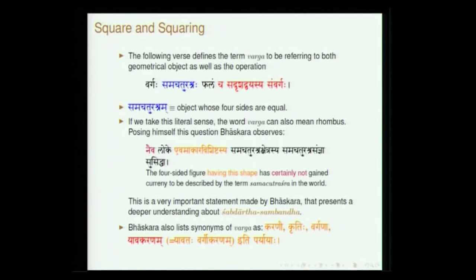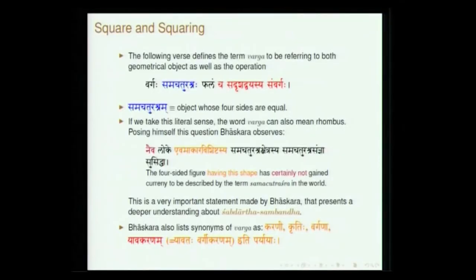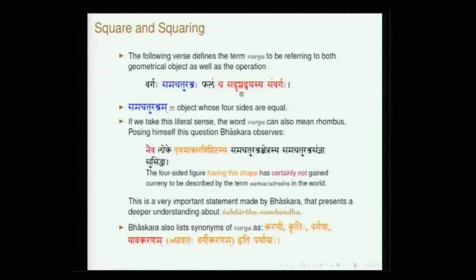Then he moves on to describe the fundamental operations. We start with varga and he defines what the term varga means. He says: vargaha samachaturashrahah phalam ca sadishadvayasya samvargaha. One is a certain geometrical representation — square — and the other refers to the operation of squaring. Both are stated here: samachaturashrahah means a four-sided figure; samachaturashra refers specifically to a square. Mathematically, samvarga refers to product and sadishadvaya means two equal quantities. The product of two equal quantities is what is represented — and both are referred to as varga.